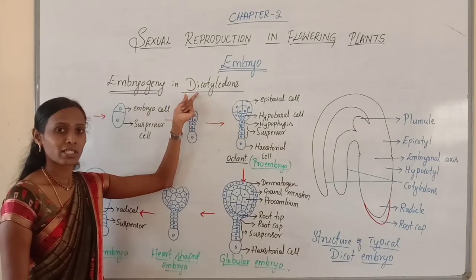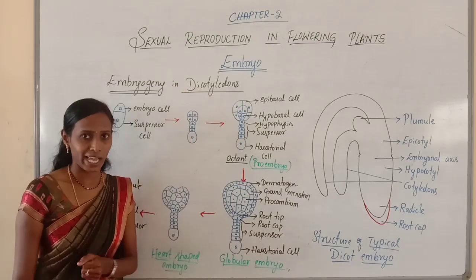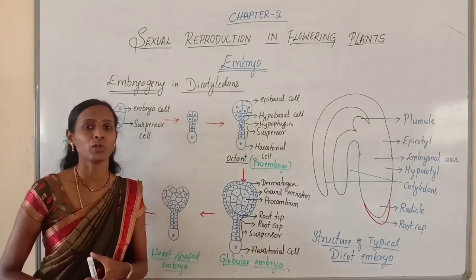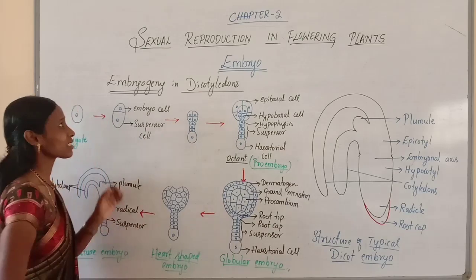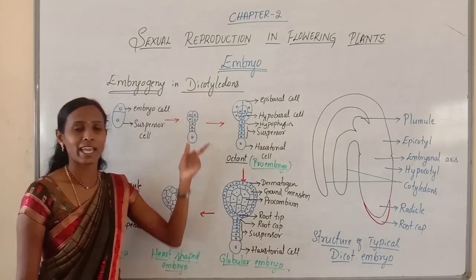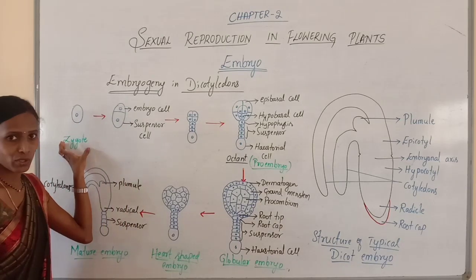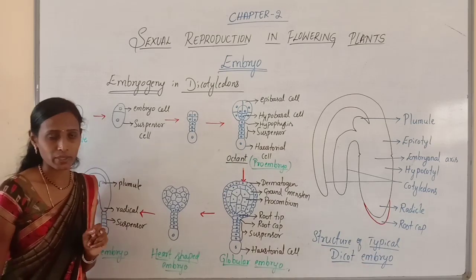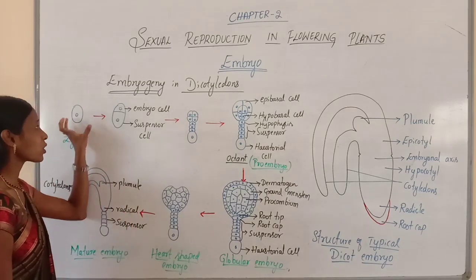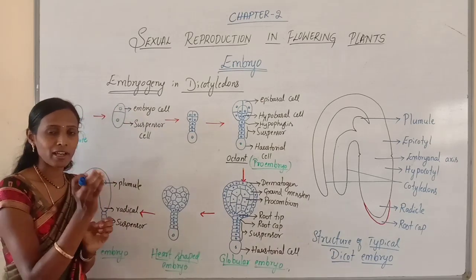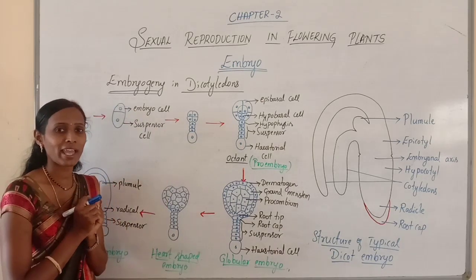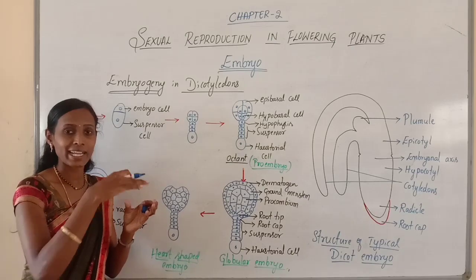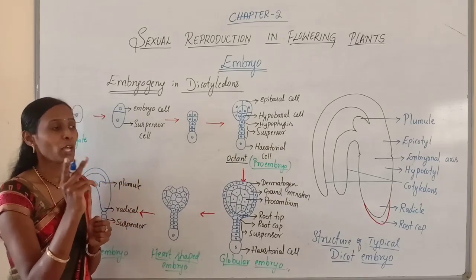Di refers to two — the seeds which contain two cotyledons are called dicotyledons. In a typical dicot, this zygote present at the micropilar end of the embryo sac will first elongate and then divide by a transverse wall to form two unequal cells.